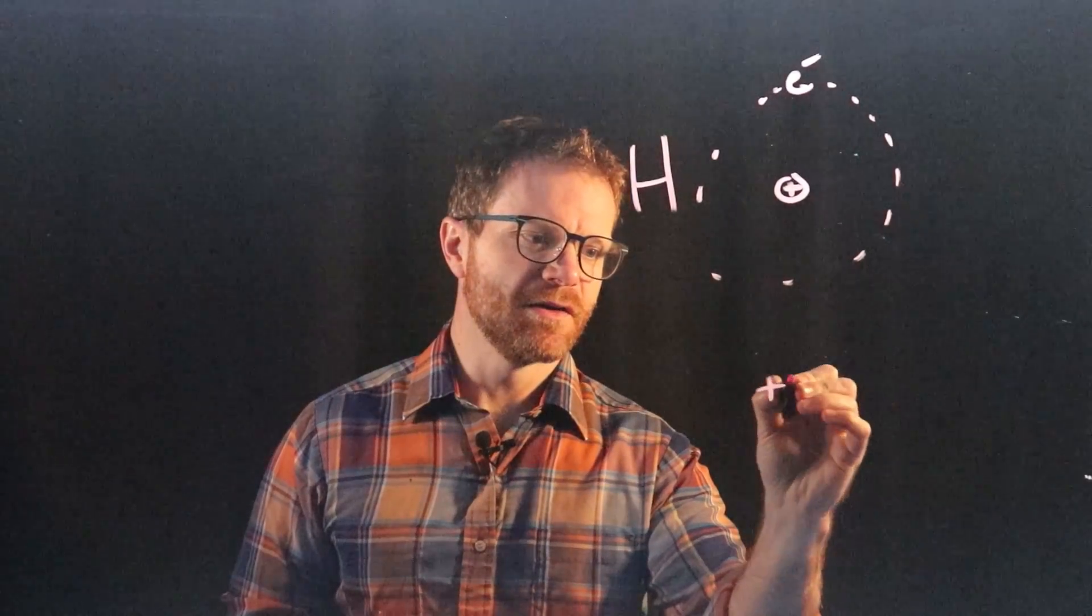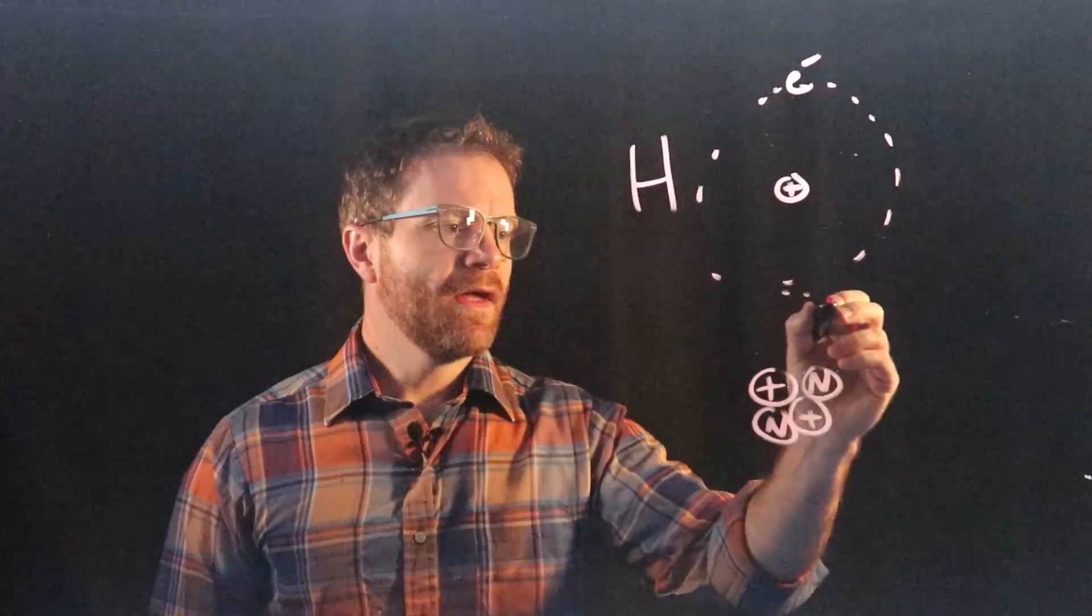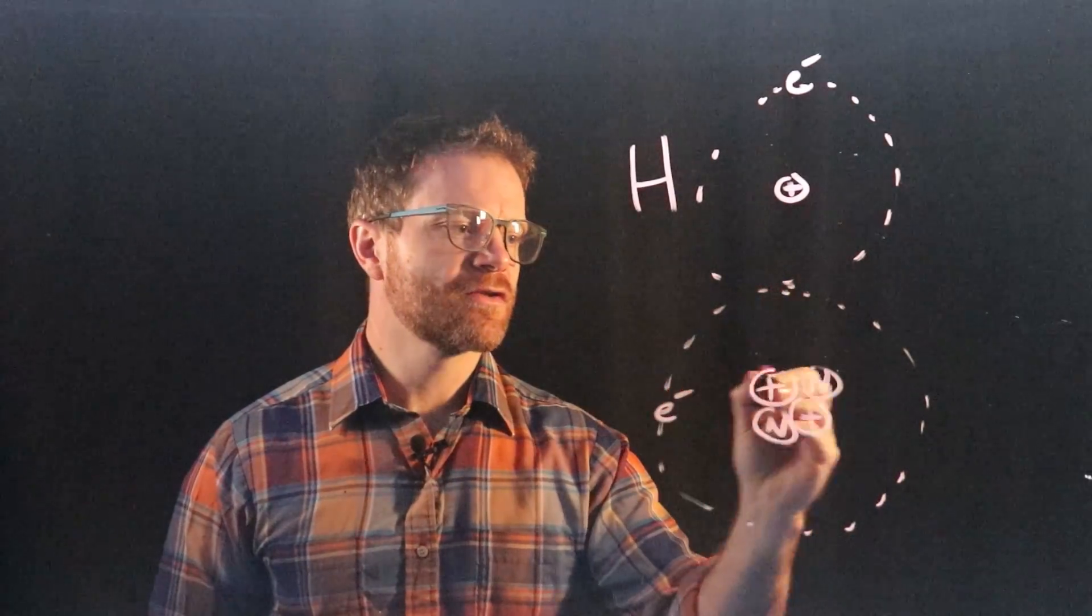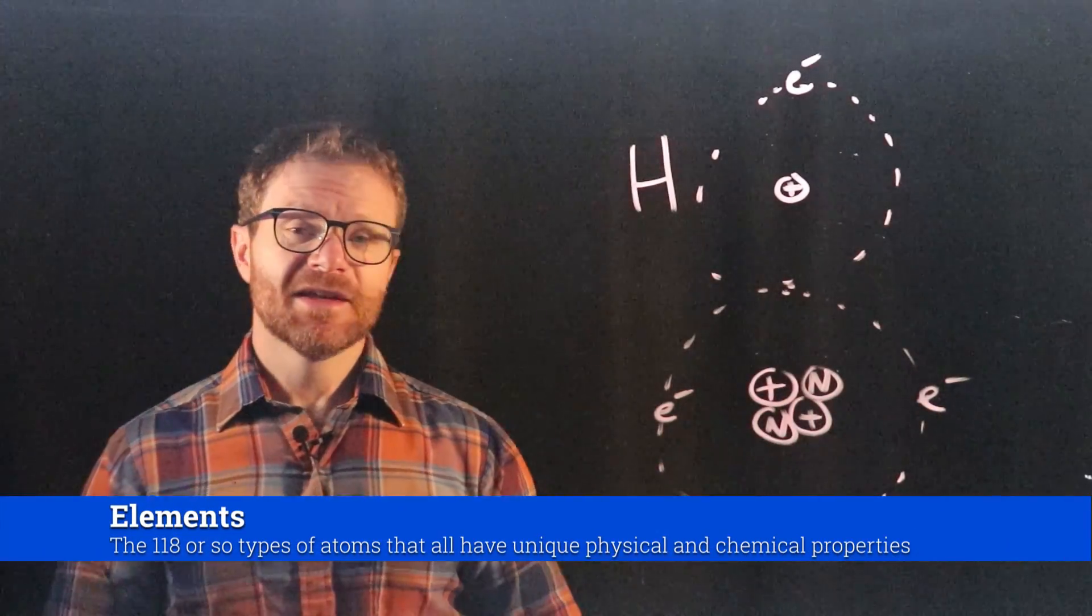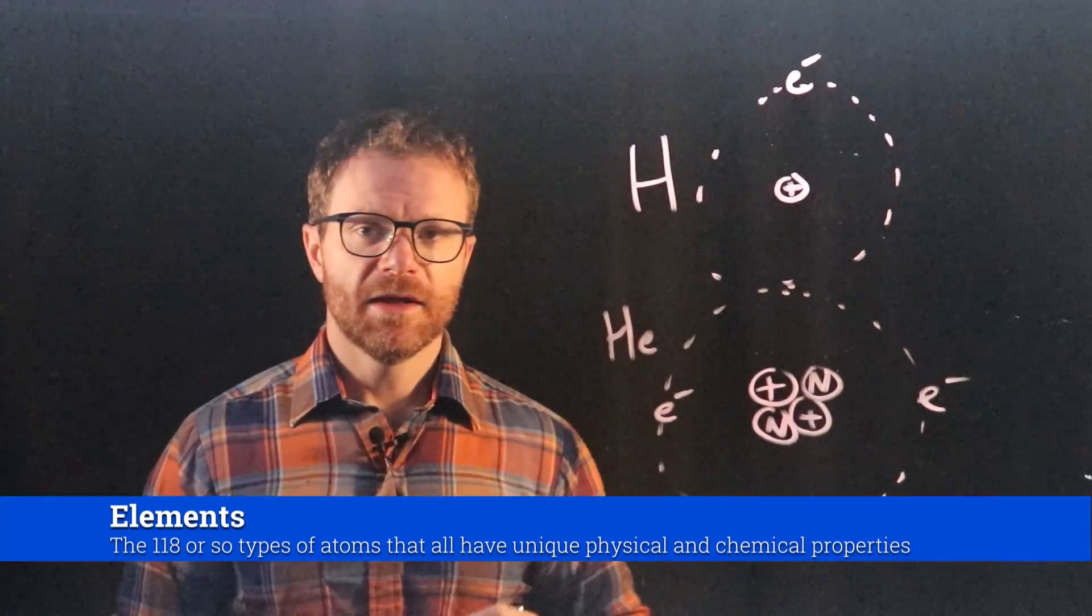If we had two protons in the nucleus, well, there would also be two neutrons. And then orbiting that, there would be two electrons. And this represents the second smallest in the periodic table, helium.